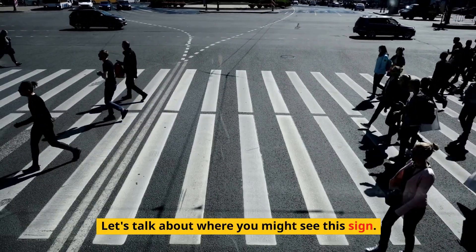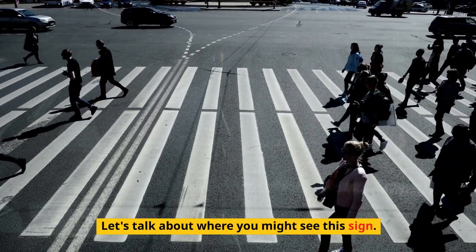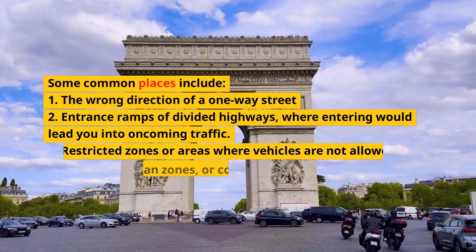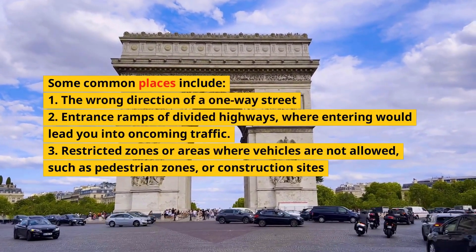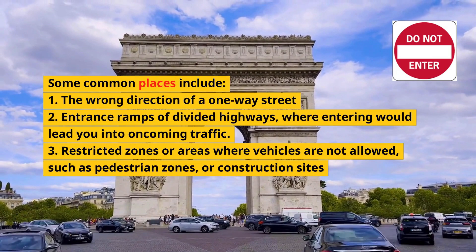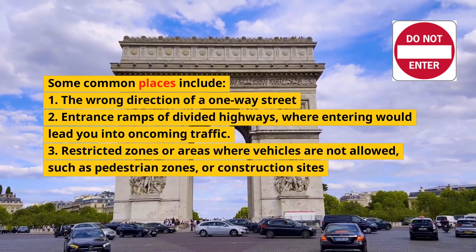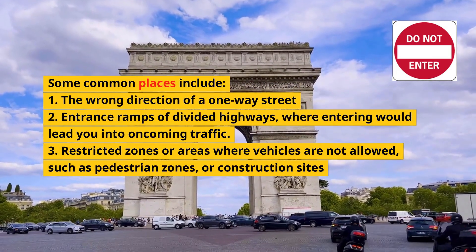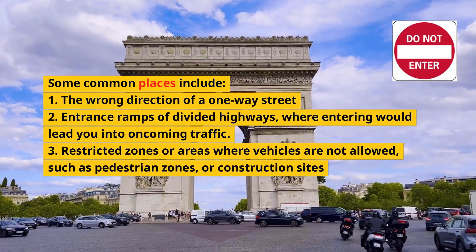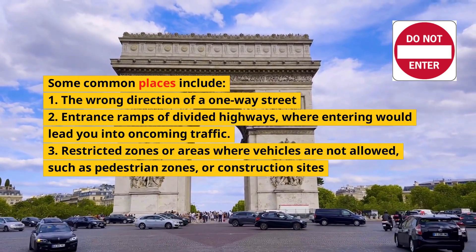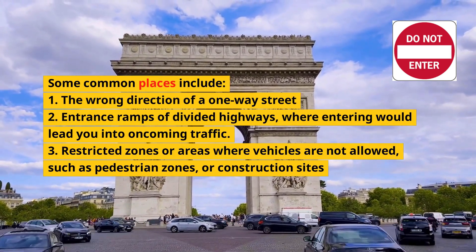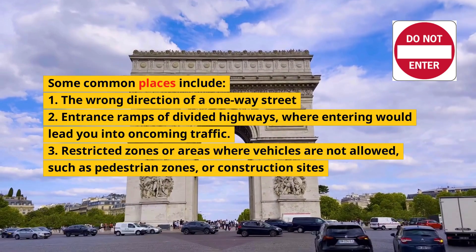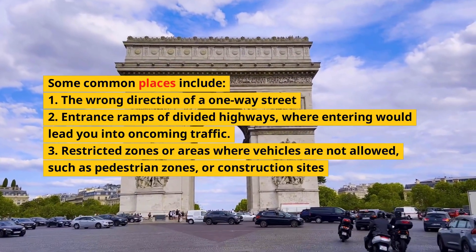Let's talk about where you might see this sign. Some common places include the wrong direction of a one-way street, entrance ramps of divided highways where entering would lead you into oncoming traffic, and restricted zones or areas where vehicles are not allowed, such as pedestrian zones or construction sites.